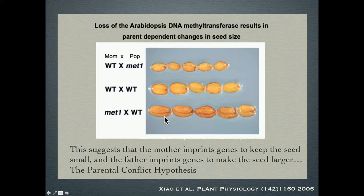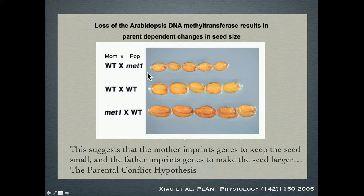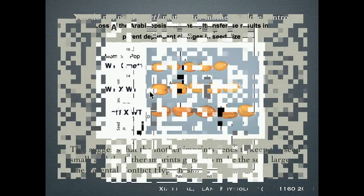So the idea here is that mothers are imprinting a specific subset of genes to reduce seed size, maybe to balance resources. And if we go along with the parental conflict hypothesis, which stems from kinship theory, the father is being more aggressive - potentially imprinting genes that would otherwise make the seed smaller, trying to get more of those maternal resources for his particular offspring. That's why in the absence of the ability to imprint, instead of having a normal-type seed, now they become much smaller. Imprinting has this direct effect on resource allocation and the sizes of seeds.